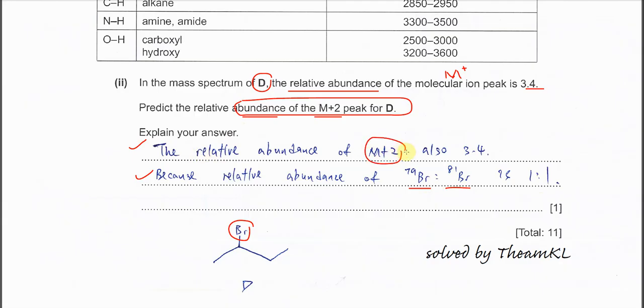The relative abundance of M plus 2 also 3.4. Why? Because M and M plus 2 must be 50-50 percent each. That's why the relative abundance of M plus 2 also going to be 3.4. Since this one is 3.4, the M plus 2 also need to be around 3.4. Why? Because the relative abundance of these 79 bromine and 81 bromine they are one to one. That's what you need to explain.